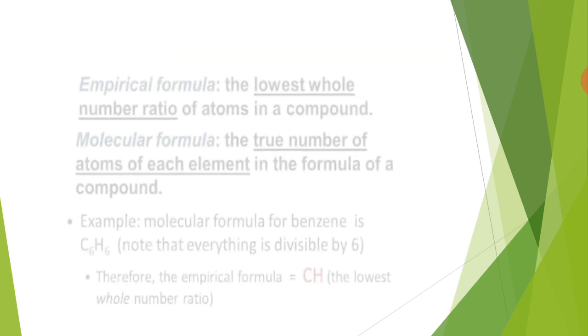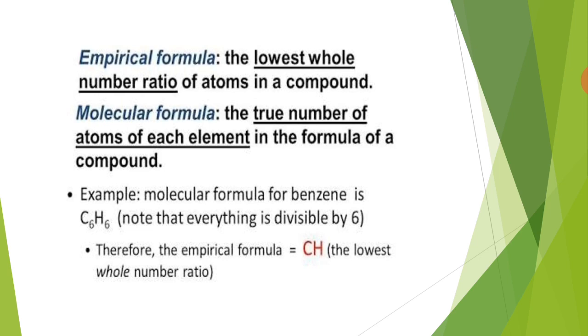First we discuss empirical formula and molecular formula. Empirical formula tells us the simplest or lowest whole number ratio of atoms in a compound, whereas the molecular formula gives the actual or true number of atoms of each element in the formula of a compound.